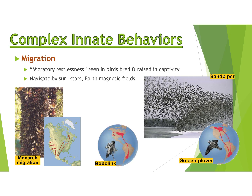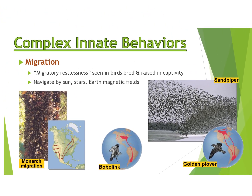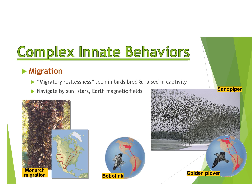An example of a complex innate behavior is migration. Many animals migrate, usually due to seasonal changes, food availability, or weather. Examples include butterflies, bobolinks, other birds, and whales. Birds raised in captivity will show migratory restlessness — they know they should be migrating and get restless if they can't. These animals navigate by the sun and the stars. Locally, the geese you see around here are from Canada, so we are actually south for them.